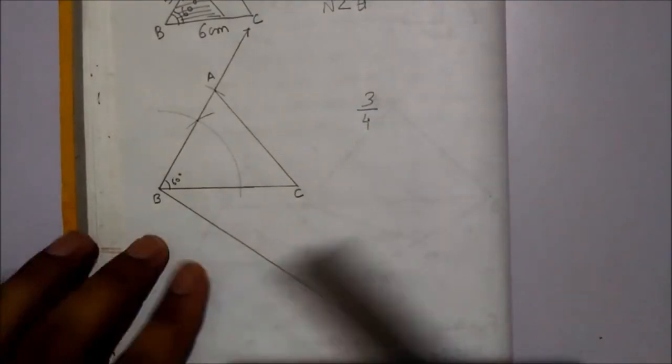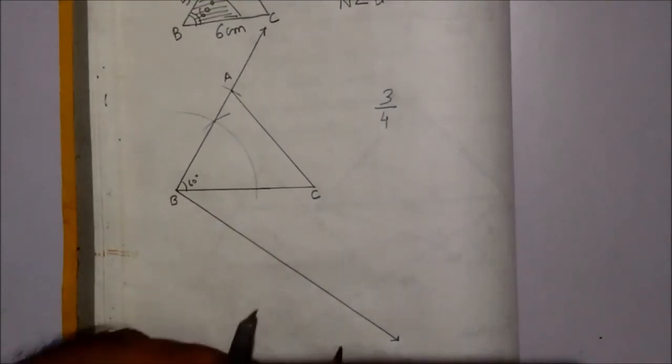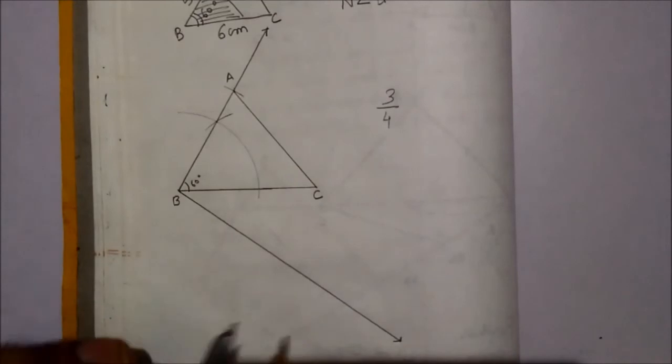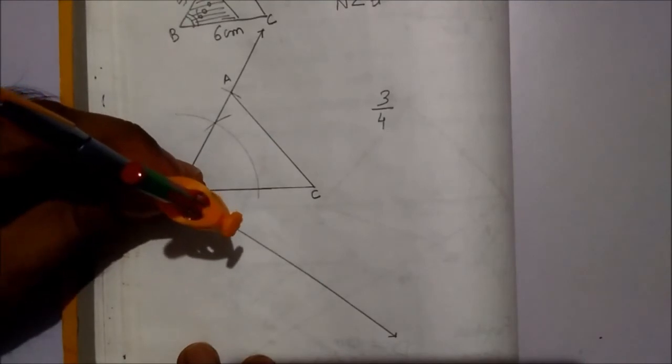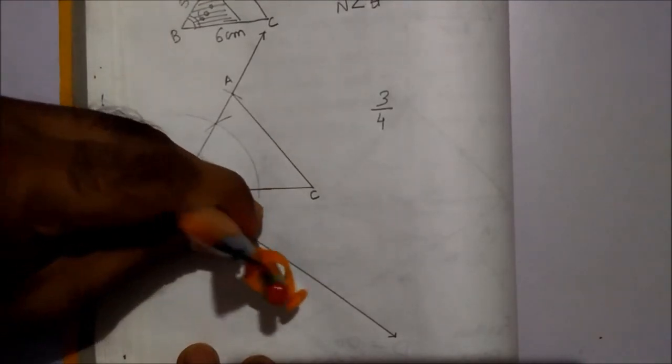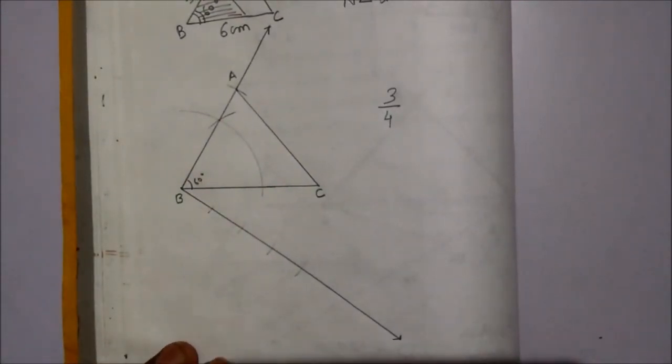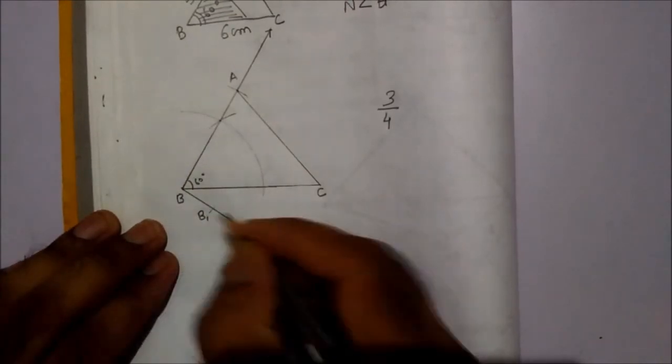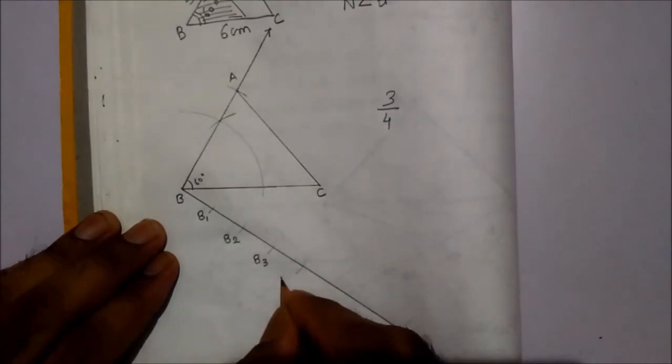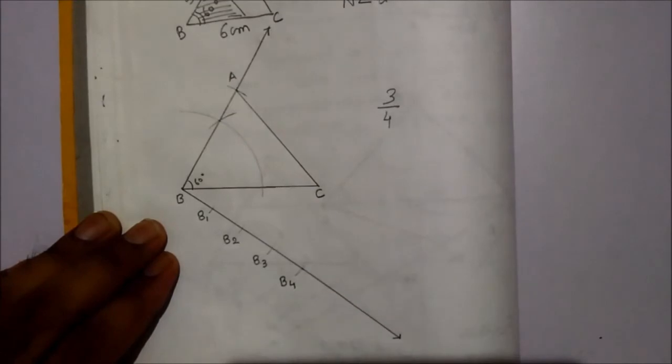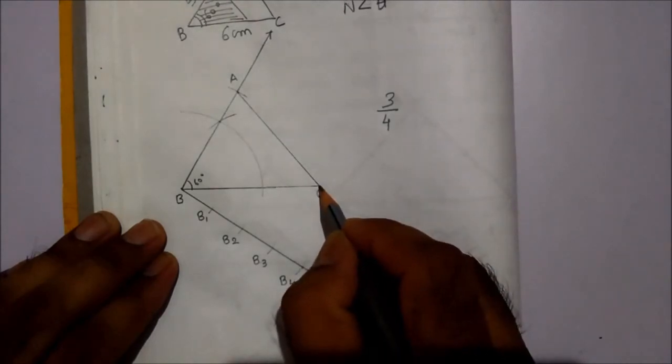The highest part is 4, so we have to give 4 arcs by taking appropriate radius. 1, 2, 3, 4. Let's name this B1, B2, B3, B4. So we have to draw 4 parts. Denominator. So the 4th part, this we have to join with C.